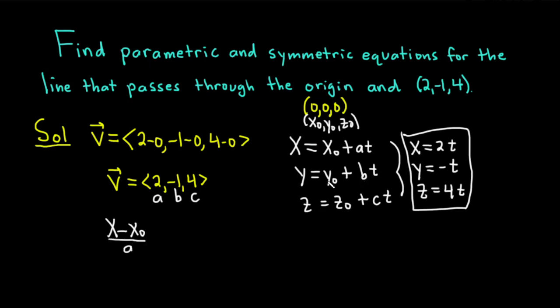If you solve the second equation for t, you subtract y0 and divide by b. So you get (y - y0) / b. And if you solve the third equation for t, you get (z - z0) / c. These are called the symmetric equations.